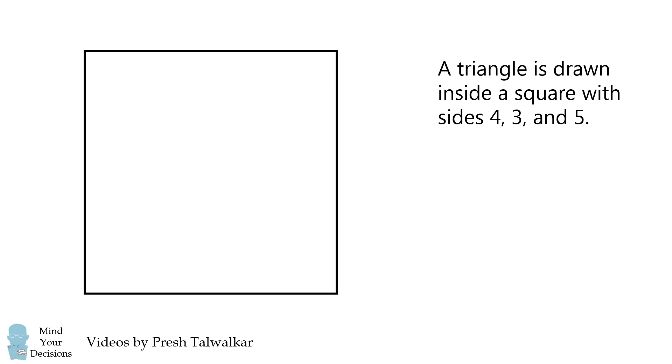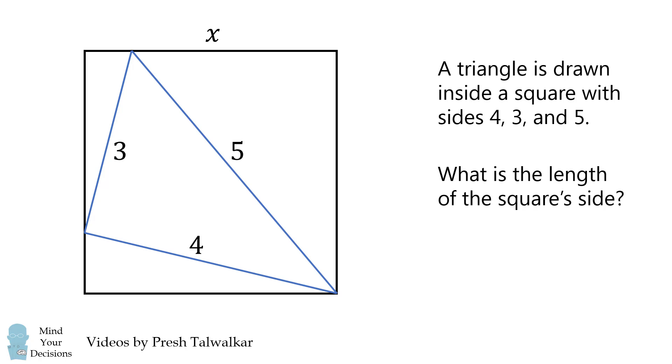A square has a triangle inside of it with lengths of 4, 3, and 5. What is the value of x, the length of the square side?